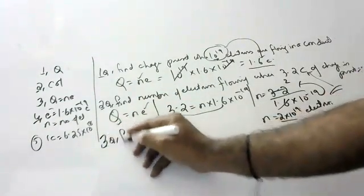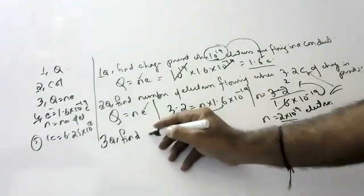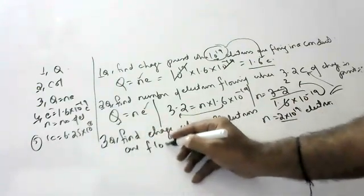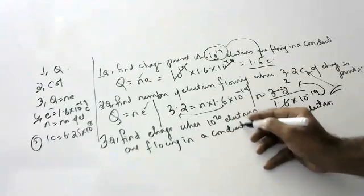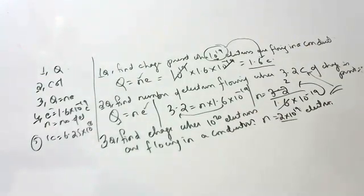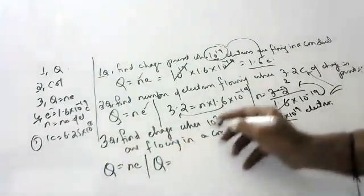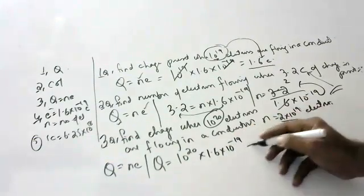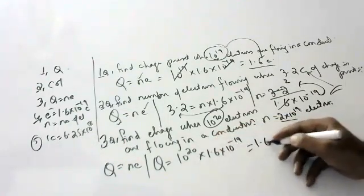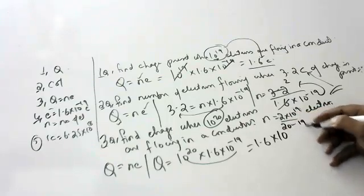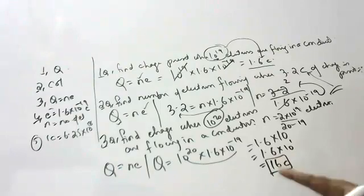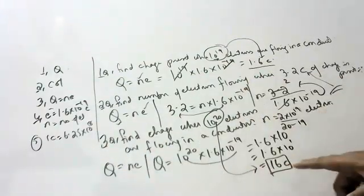One more question: find the charge when 10 to the power of 20 electrons are flowing in a conductor. Q equals NE equals 10 to the power of 20 into 1.6 into 10 to the power of minus 19. Since the base is the same, powers are added: 20 plus minus 19 equals 1, so Q equals 1.6 into 10 to the power of 1, which is 16 Coulombs. If 10 to the power of 20 electrons are flowing, that wire has 16 Coulombs of charge.